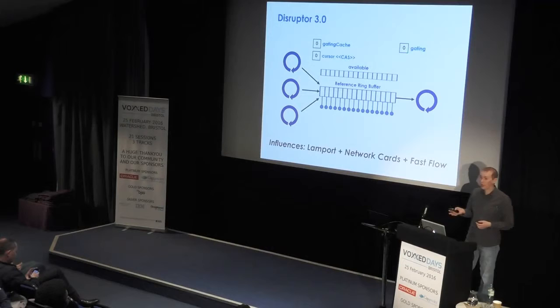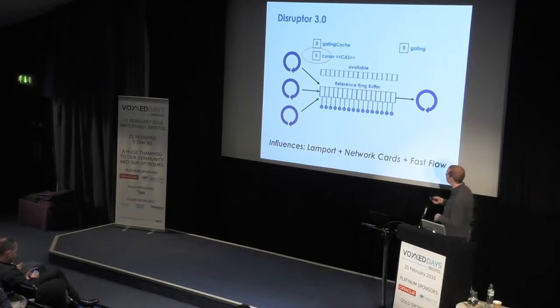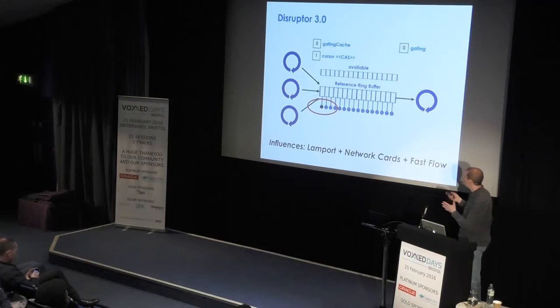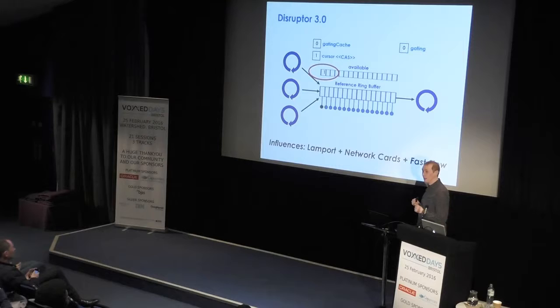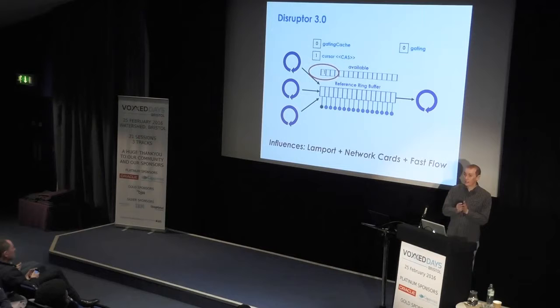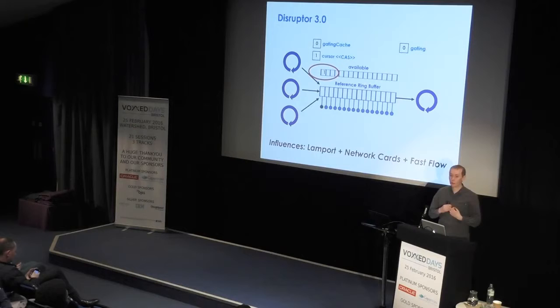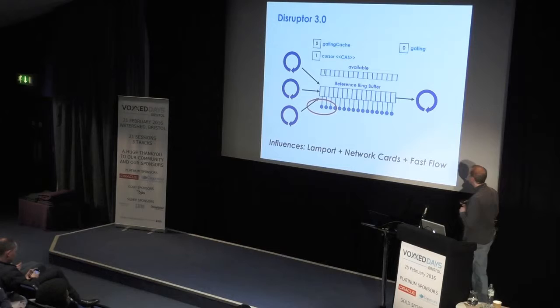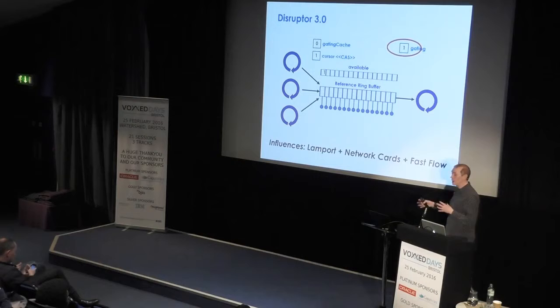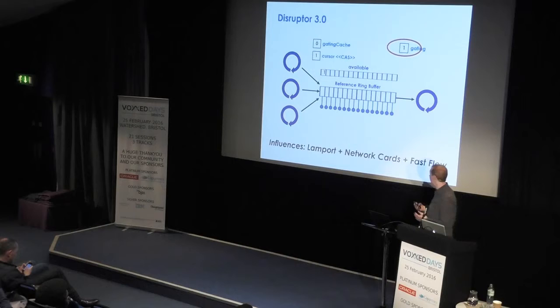We took ideas from FastFlow and put them into Disruptor 3. Very similarly, we claim the slot we want to use and work with the array, but then rather than updating a counter we just mark in a separate array that the slot is complete. This means all threads can run independently — you're no longer waiting on the thread behind you. The key insight: do not entangle threads together. If you can break the entanglement, you're no longer subject to Amdahl's Law for that part of the algorithm. That's where Amdahl's Law hunts you down, especially when things go wrong.